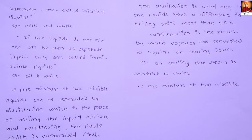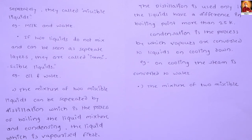In distillation, the liquid is converted to vapour and then condensation occurs — condensation is the process by which vapours are converted to liquid on cooling down. For example, on cooling, steam is converted to water. If the boiling point difference is less than 25 Kelvin, a different separation method is needed.